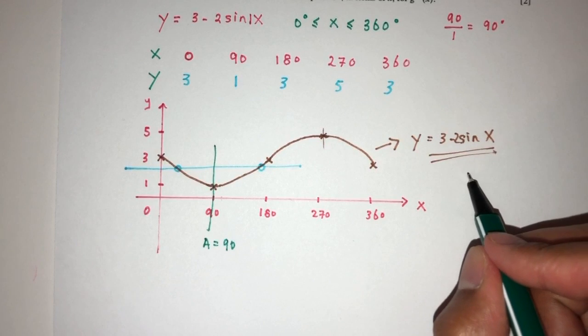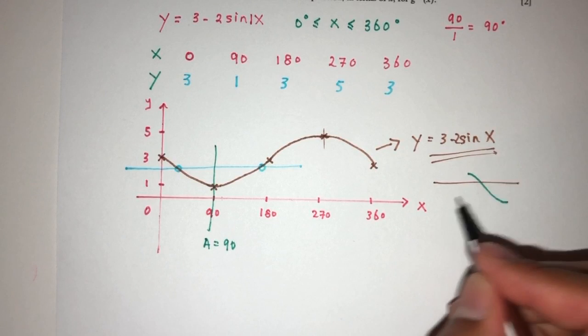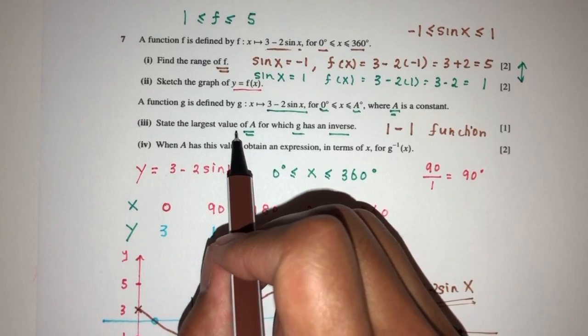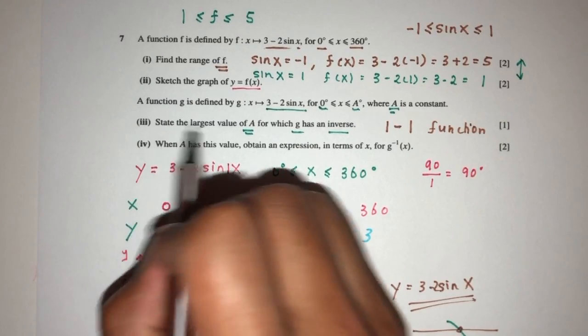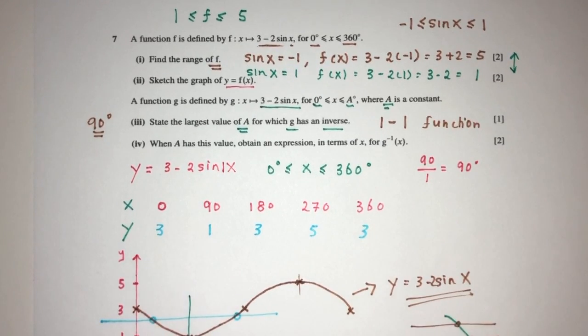you will have only this part. Now when you have this part, when you draw your line, we have only one point and one point. This is how we can make this become a one-to-one function. So, a will have to be, the largest value of a, have to be 90 degrees. That's the largest value of a.